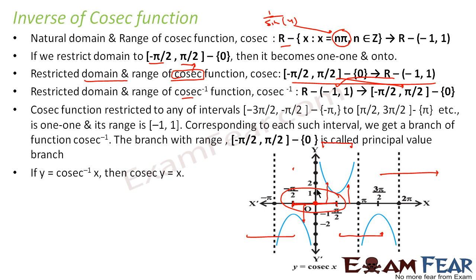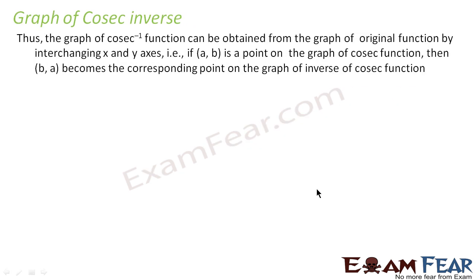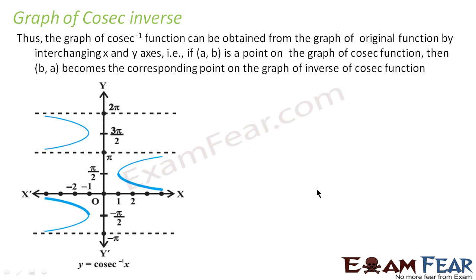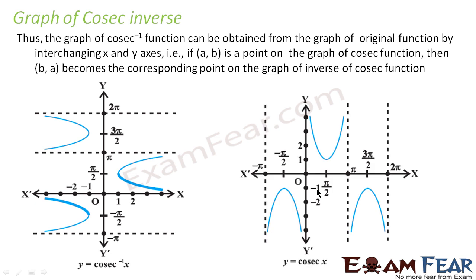If y equals cosec inverse x, then cosec y equals x. Similarly, to draw the graph of cosine inverse x, we start with the graph of y equals cosine x. Since cosine inverse is just the reflection, we flip that graph to obtain y equals cosine inverse x.